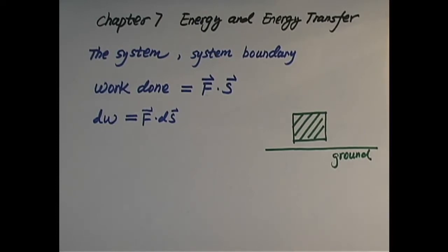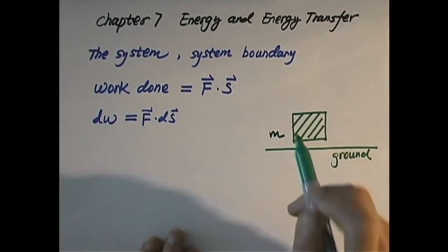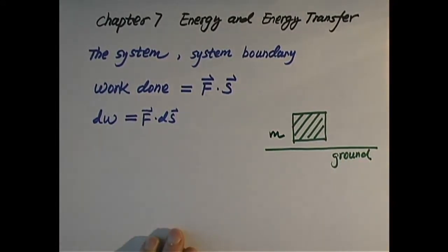After that, we can discuss that the environment transferred energy to the system or the system delivers energy to the environment. For example, right now we have an object of mass m and it's on the ground. We identify this object as our system.